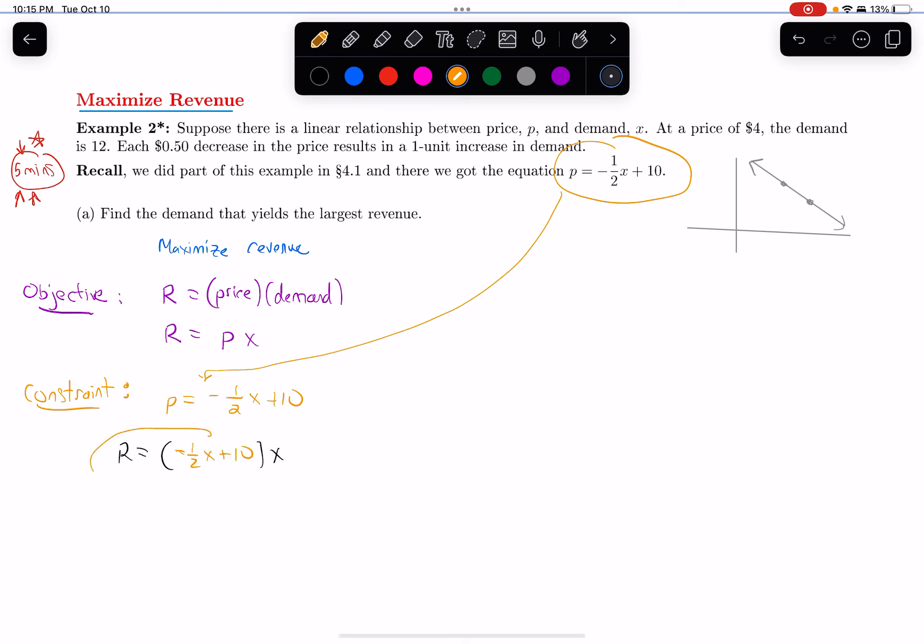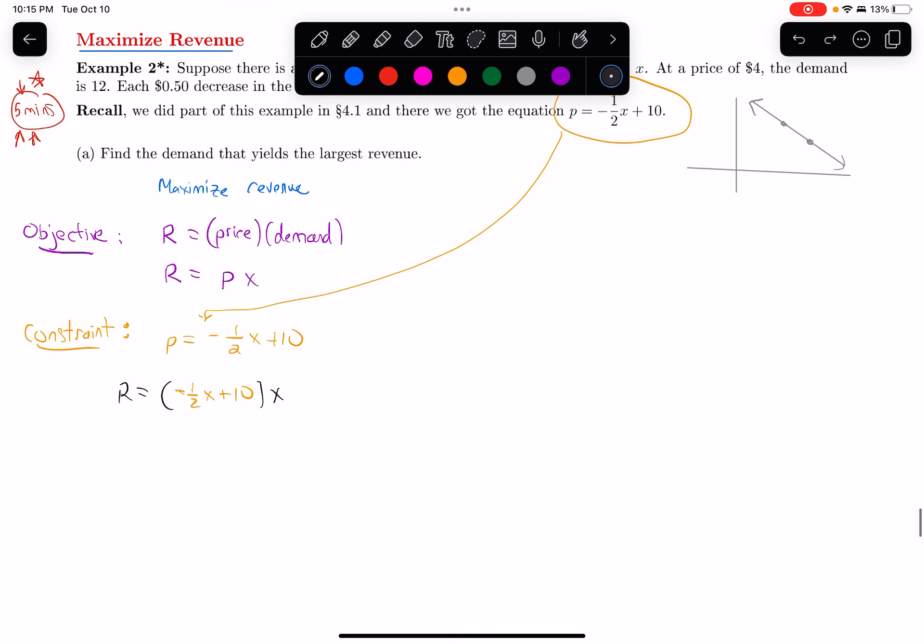So I like the fact that revenue is now in terms of one variable. So I'm going to simplify this. Let's distribute the x in. That gives me negative one half x squared plus 10x.